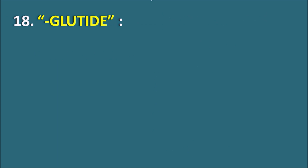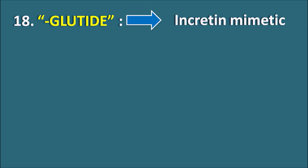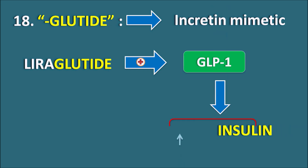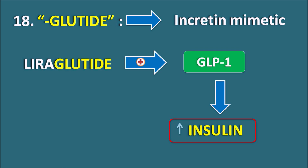The 18th suffix is Glutide, which indicates they are incretin mimetics. We have one drug, Liraglutide. This drug acts as an agonist at the glucagon-like peptide-1 receptors, by which it can increase insulin secretion. Incretins like glucagon-like peptide are released after a meal, so post-prandial insulin secretion is increased by incretin mimetics. Liraglutide is particularly used to control glucose levels after a meal and can be given as an injection.